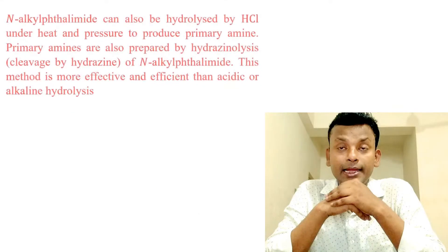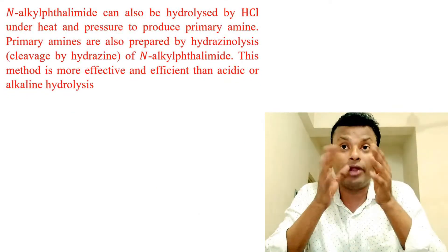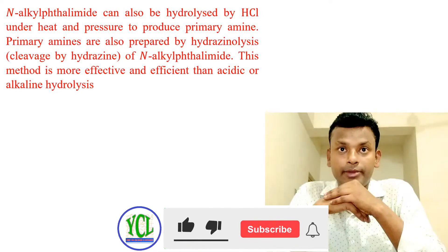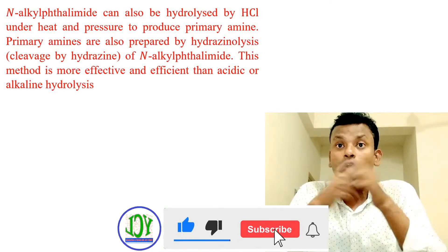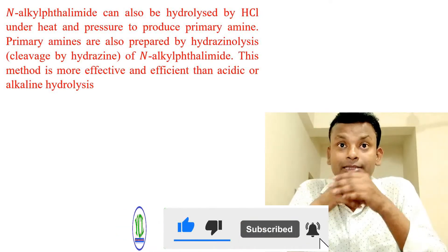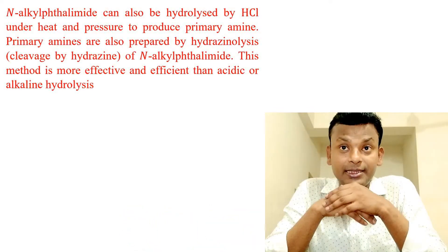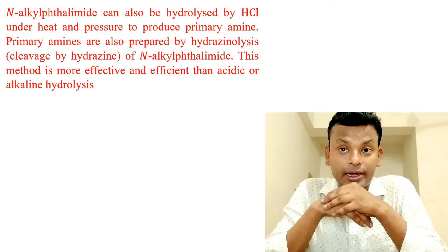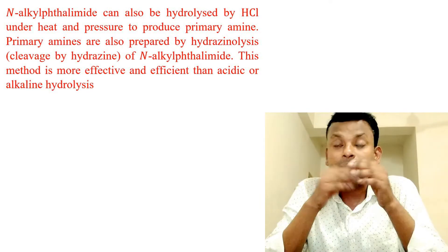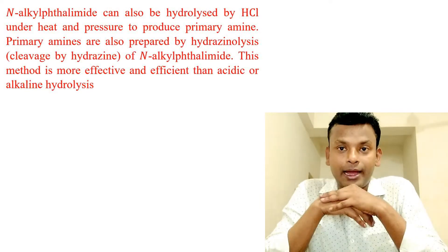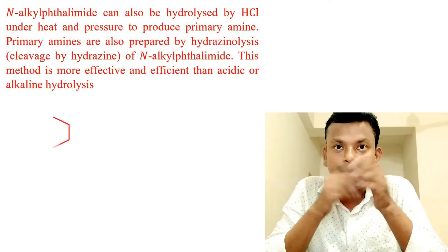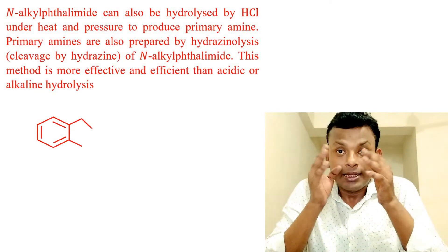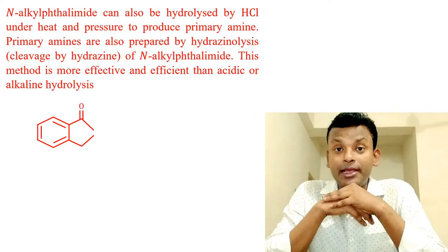N-alkyl phthalimide can also be hydrolyzed by HCl under heat and pressure to produce primary amine. Primary amines are also prepared by hydrazinolysis — cleavage by hydrazine of N-alkyl phthalimide. This method is more effective and efficient than acidic or alkaline hydrolysis. N-alkyl phthalimide reacts with hydrazine to form phthalhydrazide and primary amine.